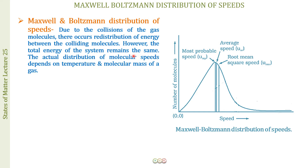The total energy of the system remains the same — the total energy before the collision equals the total energy after the collision. When we talk about the distribution of molecular speeds, the actual distribution depends upon the temperature and the molecular mass of the gas. For example, the root mean square velocity is √(3RT/M), where the changing variables are temperature and molar mass. So here we will also discuss the effect of temperature and molecular mass on the distribution of molecular speeds.